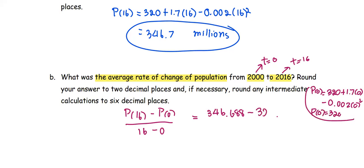We put the number here, 320, and all divided by 16 - 0, or 16. Put it in the graphing calculator or any calculator, you should get the number as 1.668. So this is the average rate of change of the population from the year 2000 to the year 2016.